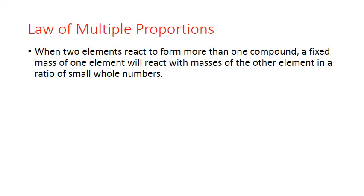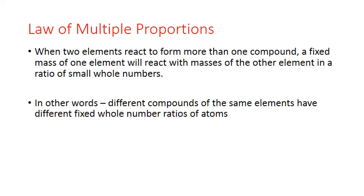Dalton used Proust's law, as well as his own observations of mass relationships, to formulate one last important law using his atomic theory. This is the law of multiple proportions. And it states that when two elements react to form more than one compound, a fixed mass of one element will react with masses of the other element in a ratio of small whole numbers. Another way of stating this is that different compounds of the same elements have different fixed whole number ratios of atoms.